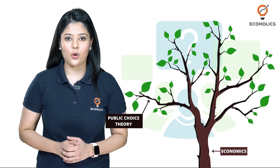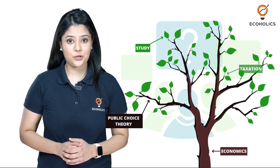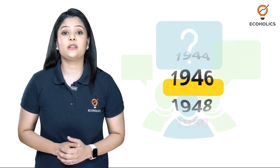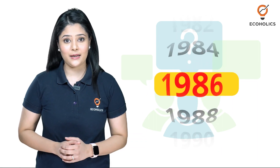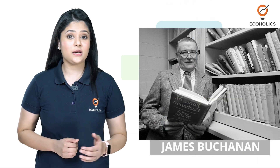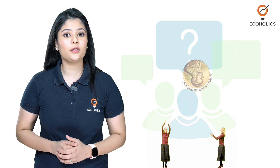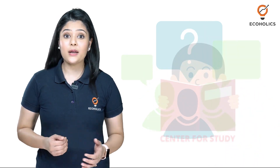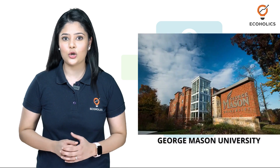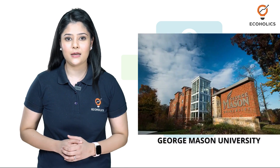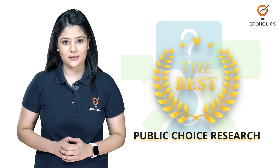Public choice theory is a branch of economics that developed from the study of taxation and public spending. It emerged in the 50s and received widespread public attention in 1986 when James Buchanan, one of its two leading architects, was awarded the Nobel Prize in Economics. Buchanan started the study for Centre of Public Choice at George Mason University and it remains the best-known locus of public choice research.